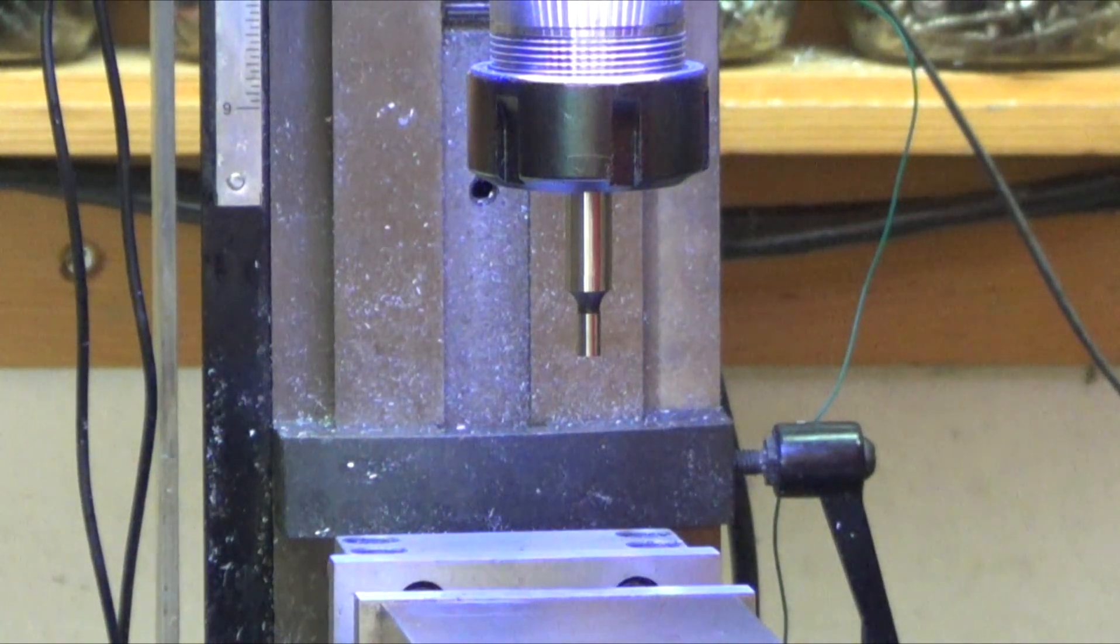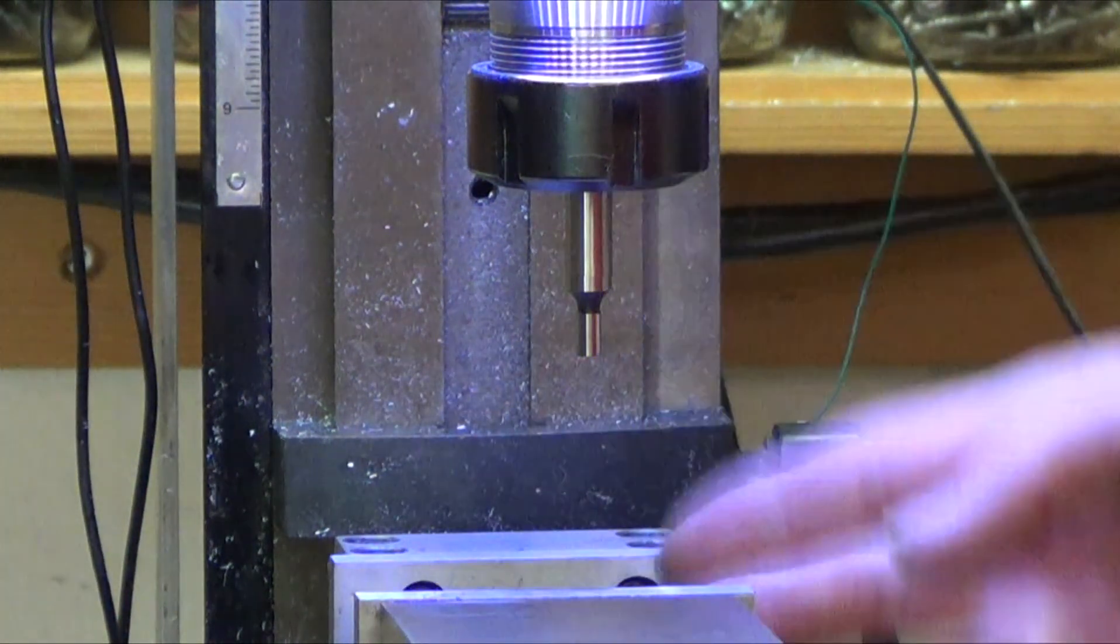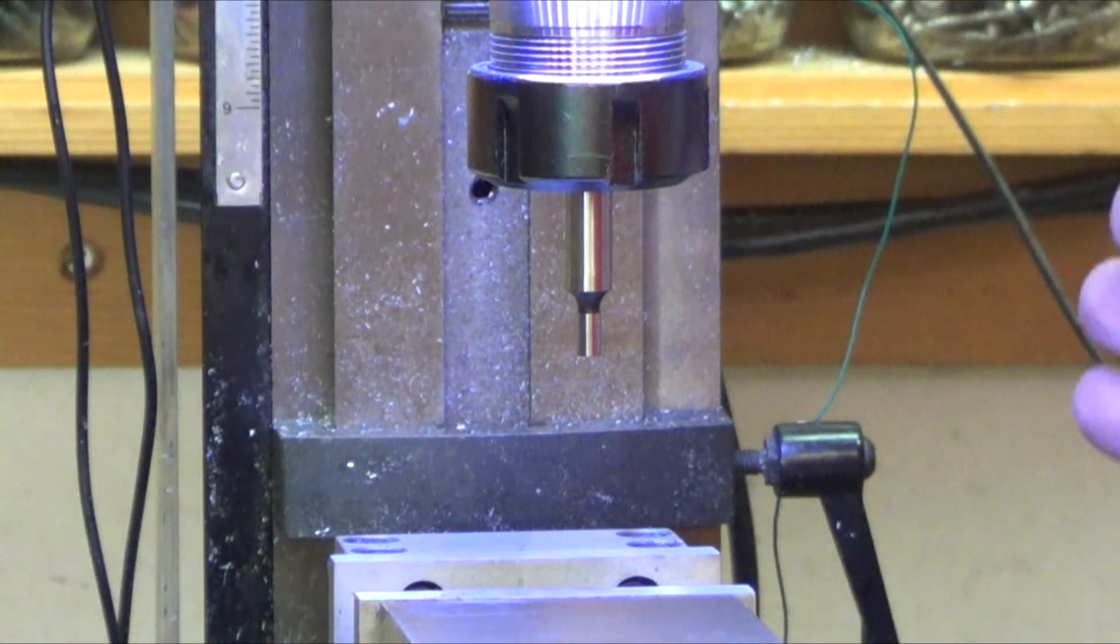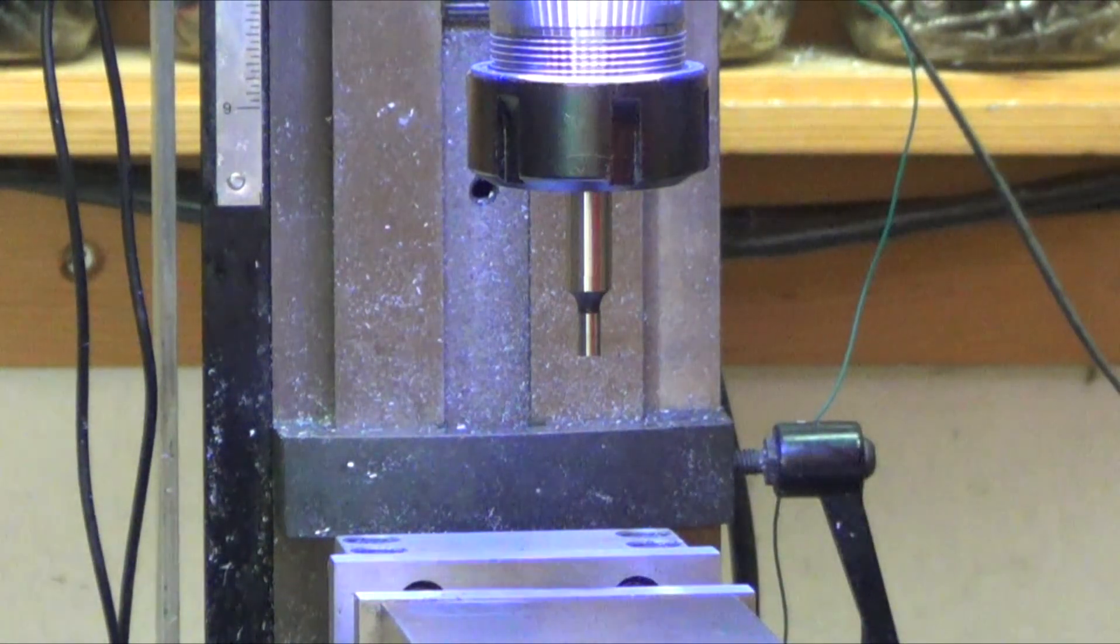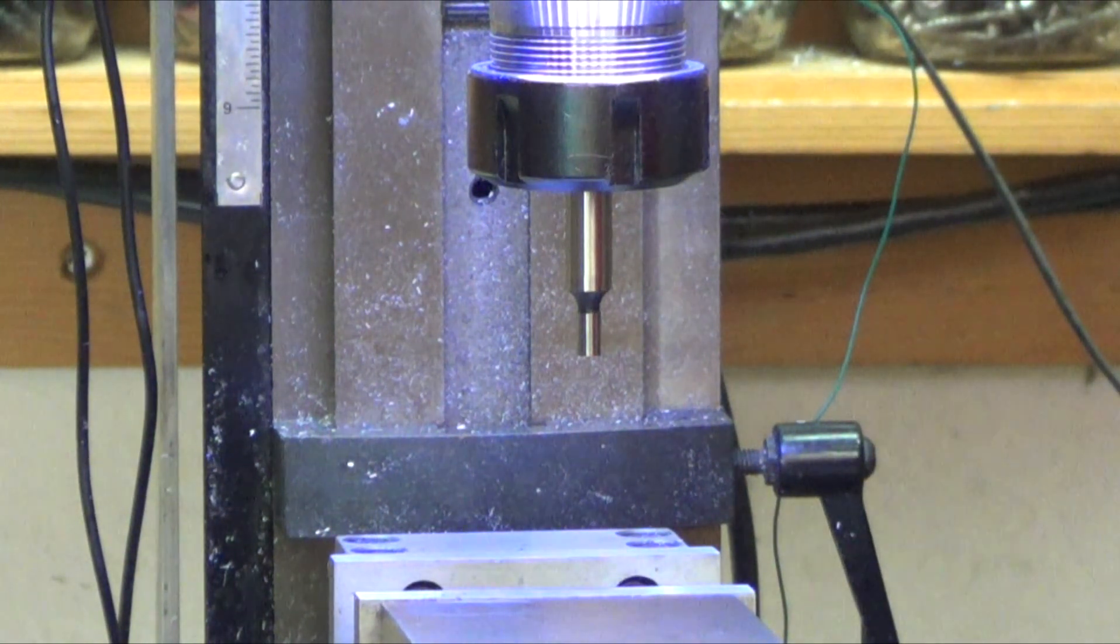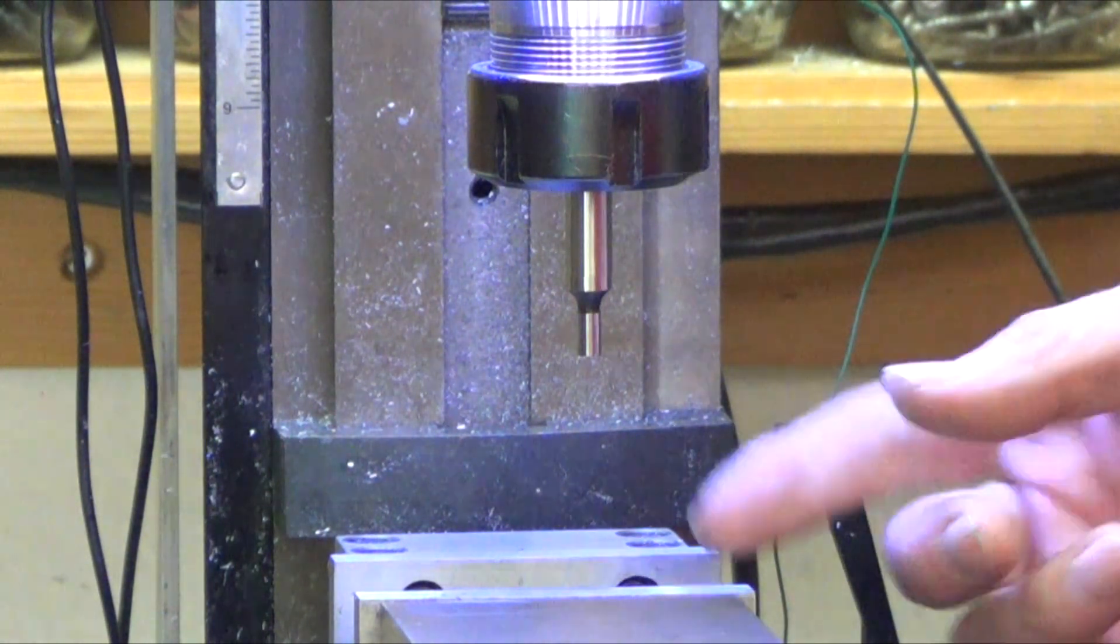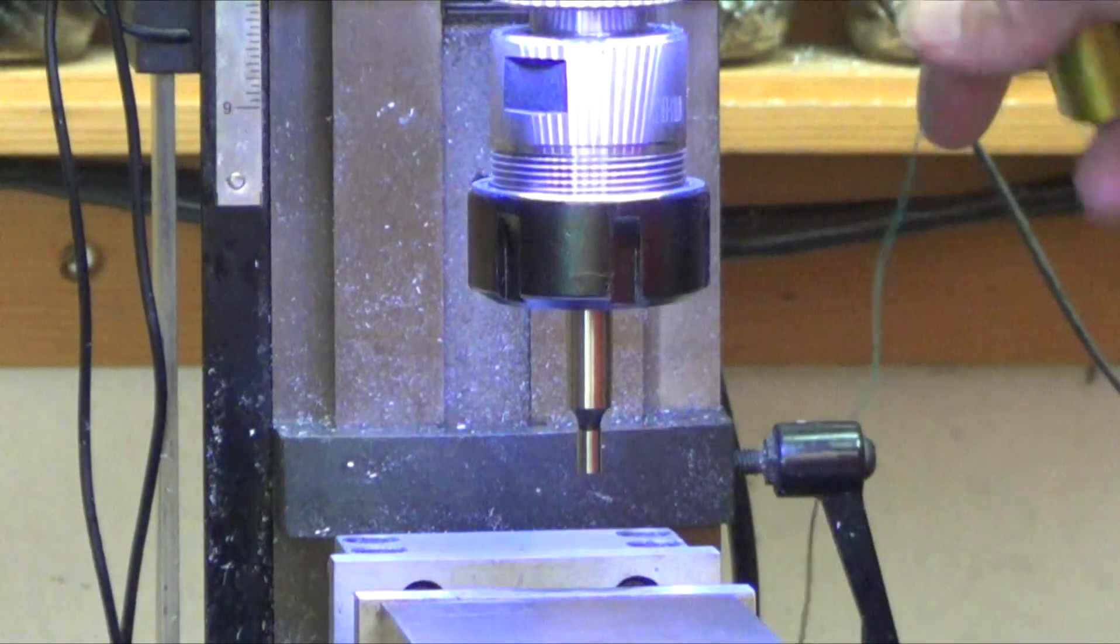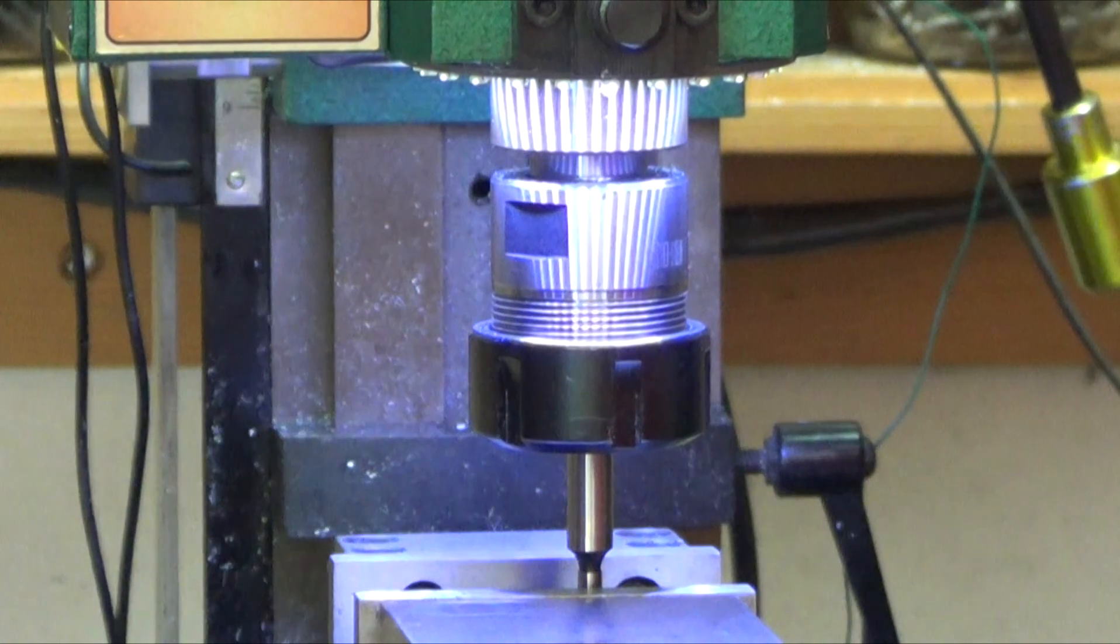I wish I could get the dual camera so you can see the DRO and the edge finder at the same time. Suppose you have something in here and you want to face it off, but you want to take off only three thousandths of an inch, trying to make something with extremely accurate height tolerances. What you're going to do is run your edge finder.